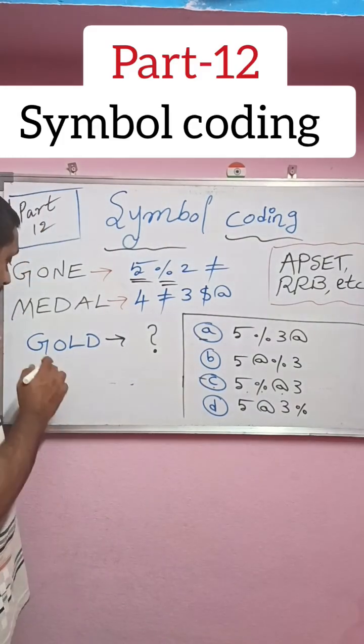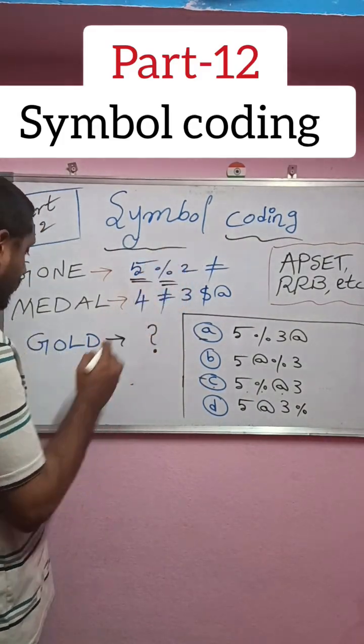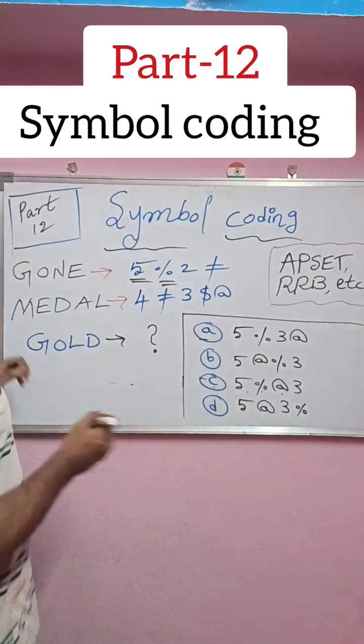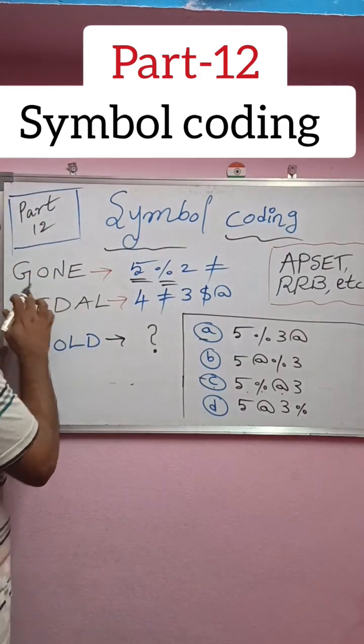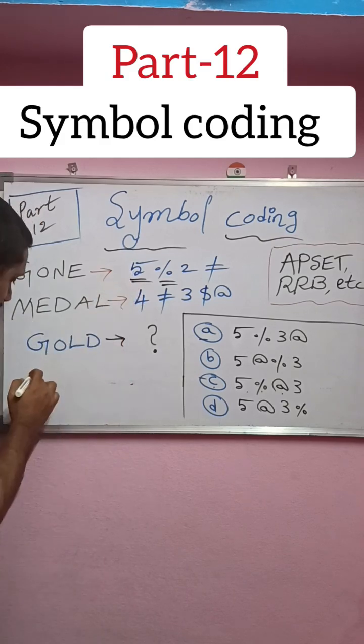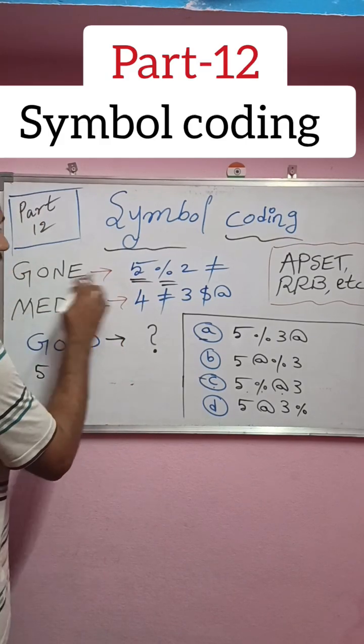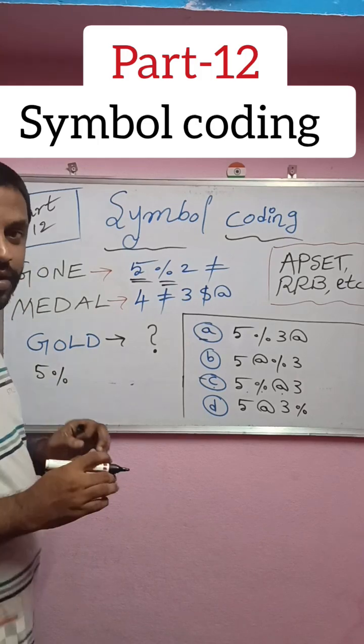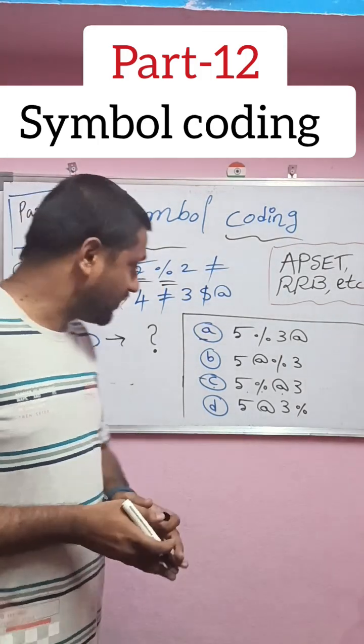What is asking? What is the code language using symbol coding for GOLD? You observe carefully in the first code language: G is coded as 5, O is coded as percentage. Already you got two letters. You need to find out the remaining two letters, L and D.